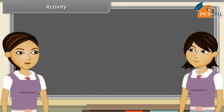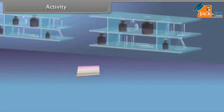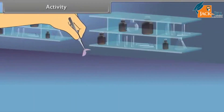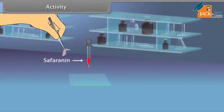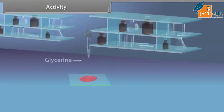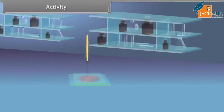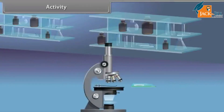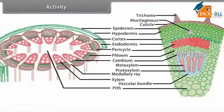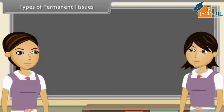We can see by an activity that there are different types of cells in plants. Take a plant stem and cut its thin section. Then stain it with safranin and keep it on a slide with a drop of glycerine, and cover it with a cover slip. Observe it under a microscope. We can see various types of cells and their arrangement.